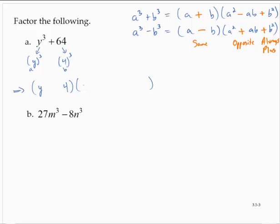I put in the a squared, so y squared. I put in the a times b; y times 4 is usually written as 4y. And I put in the b squared, 4 squared is 16. Then I go back in with the signs. This is a plus 64, so I will put the same sign, the opposite sign, always plus.